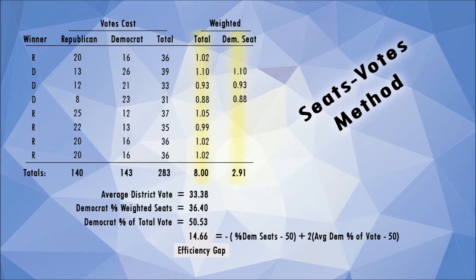Please pause if you need to absorb a formula. Starting with each district's total votes, we calculate a district average of 35.38. Using this number, we weight each district by its turnout, done by dividing each district's total by the average. Districts with more votes than average will have a value greater than one, and districts with fewer votes than average will have a value less than one. This district with 39 votes has 10% more votes than average, so its weighting is 1.10.